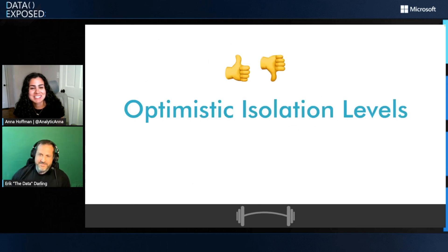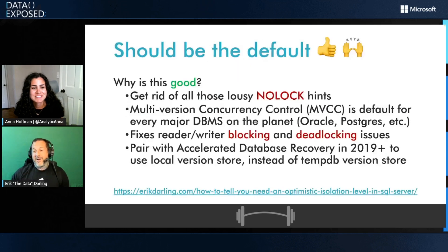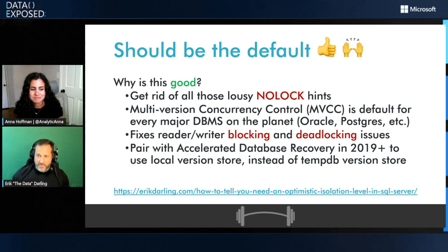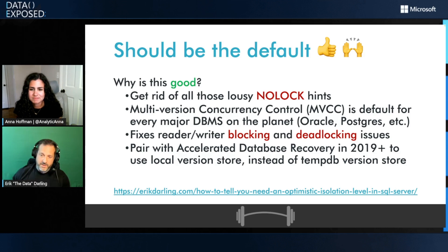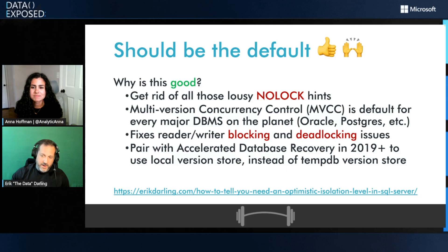The next one is optimistic isolation. I do think these should be the default, because you get rid of all those lousy nolock hints that return dirty data to your end users. You get multi-version concurrency control, which is how nearly every other database platform operates — including the current darling in the spotlight, Postgres. It fixes all the nasty reader-on-writer blocking and deadlocking issues you can hit in SQL Server under read committed. It pairs beautifully with accelerated database recovery. Those two features together make any database I look at just feel comfy.